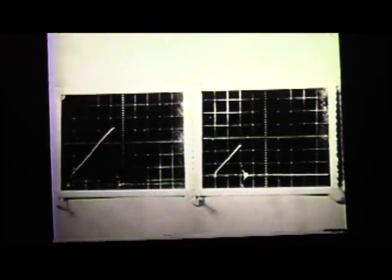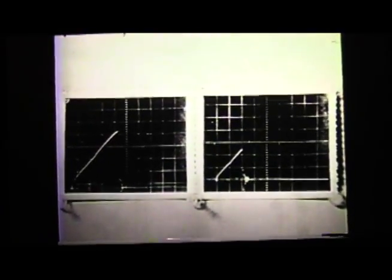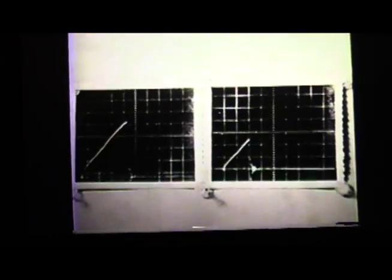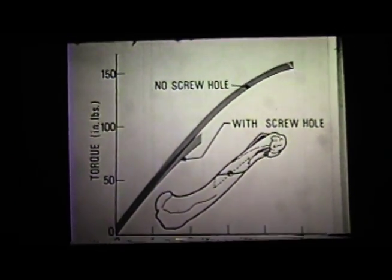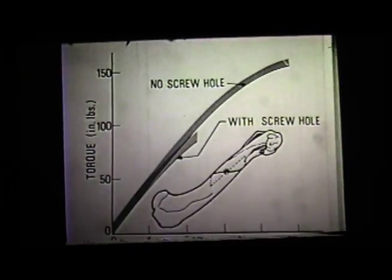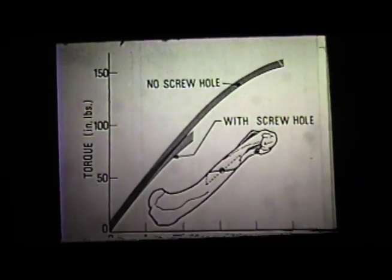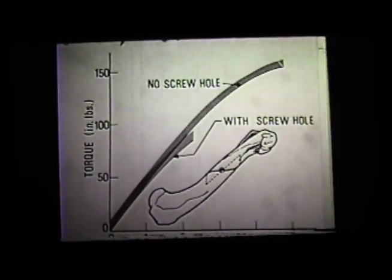Again, notice the fragments — the energy is not as high. It doesn't take very much torque to break it with the hole in there. These are the curves showing on the left an intact side and on the right the side with a screw hole in it. Notice the area under the curve in this slide — much greater with no screw hole and much less with a screw hole.